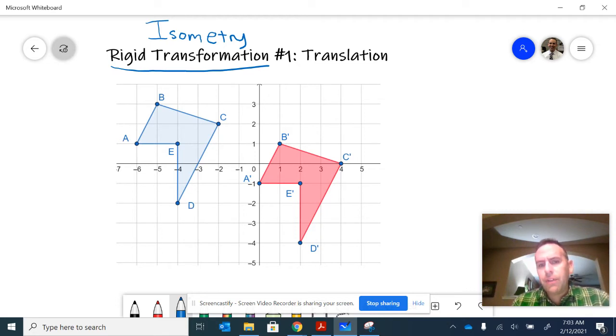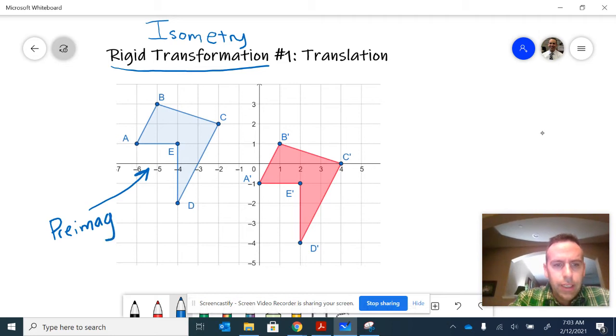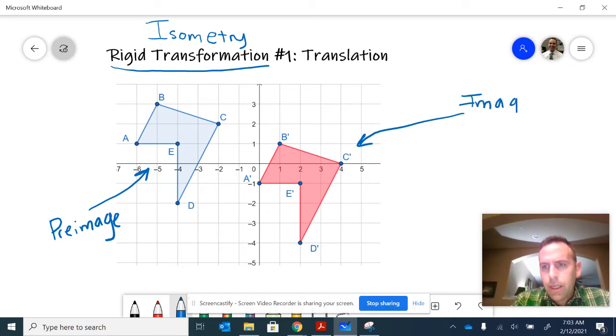Here you can see I've taken a diagram I created from GeoGebra. On the left in blue, we're going to call the pre-image before I did a translation. On the right hand side after the translation will be called my image.